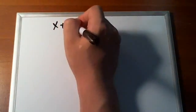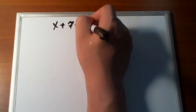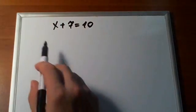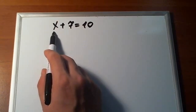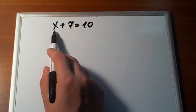Before getting into linear equations with multiple unknowns and systems of linear equations, let's see if we remember how to solve linear equations with only one unknown, with only one variable. For example, x plus 7 is equal to 10. This is a linear equation with one unknown, x, with one variable x. And we need to find out what x is.